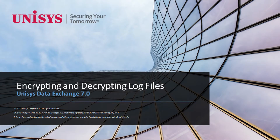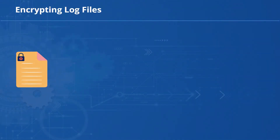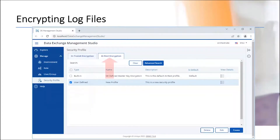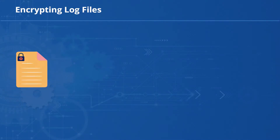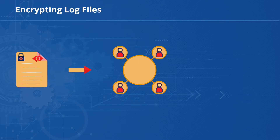Welcome to the demonstration on encrypting and decrypting the log files. Data Exchange enables you to encrypt the log files of the data exchange components to ensure the security of sensitive information. You can enable this feature through the Attrust encryption settings in the DEMS security profile page. If you enable the encryption settings for a data exchange component, the log files of that component will be encrypted. Once the log files are encrypted, only an authorized user can decrypt and view the log files, thereby increasing data security.